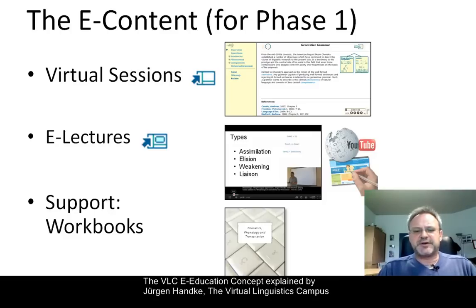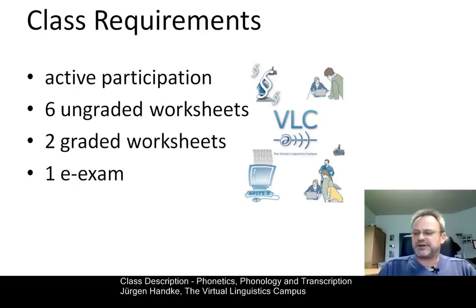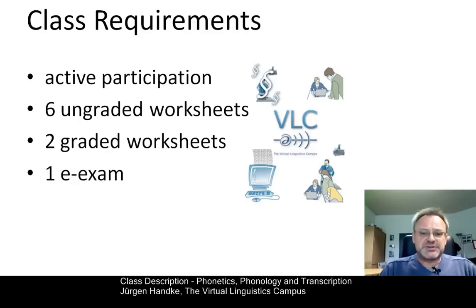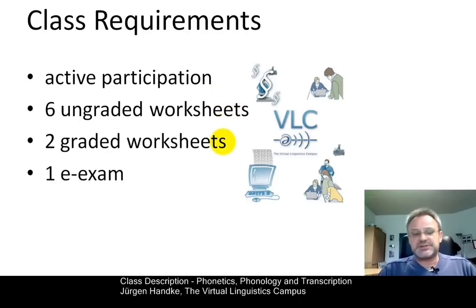You want to know what you have to do in order to get the four class credits, where one credit is the equivalent of about 30 hours workload. Active participation in our in-class meetings is necessary. Six ungraded worksheets, two graded worksheets and one e-exam at the end are required.